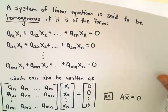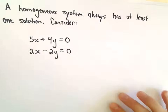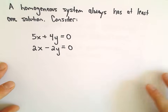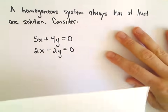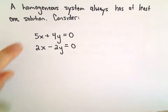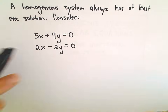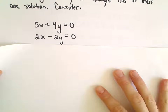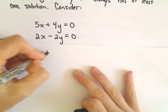Homogeneous systems can have what are called trivial or non-trivial solutions. One thing that happens is a homogeneous system always has at least one solution — the trivial solution. Let's look at this system: 5x plus 4y equals 0, and 2x minus 2y equals 0. We're going to solve this by doing a little bit of elimination by addition.